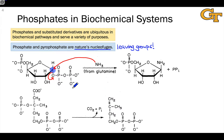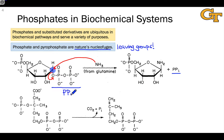The important point is that the diphosphate portion is acting as a leaving group. In biochemical contexts, this is commonly abbreviated as PPi — where Pi represents phosphate, and PPi with two P's indicates two phosphoryl groups, or pyro- or diphosphate.